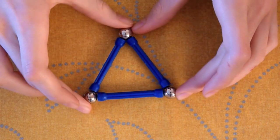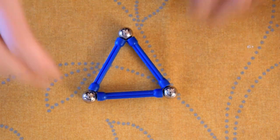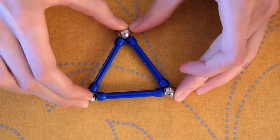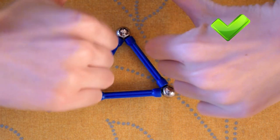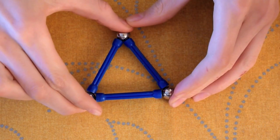I will demonstrate this using magnetic rods. Here we have a triangle. I'm pressing very hard on the sides and it doesn't break. So that means that it is perfectly strong. It is distributing its weight evenly.